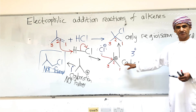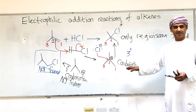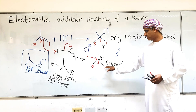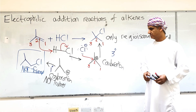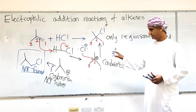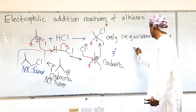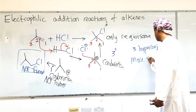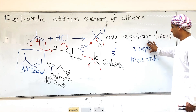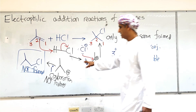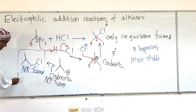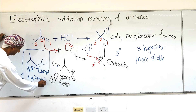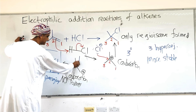There should be three hyperconjugations in the tertiary carbocation, as there are three nearby CH sigma bonds interacting with the empty p-orbital — stabilizing interactions between the empty orbital on this carbon and nearby CH sigma bonds. In the primary carbocation, there should be only one hyperconjugation. So this tertiary carbocation is more stable because it is more substituted and has more hyperconjugations.